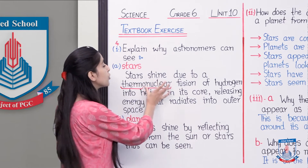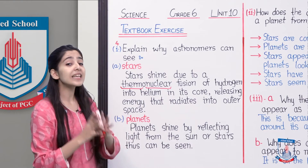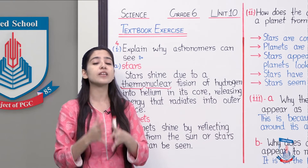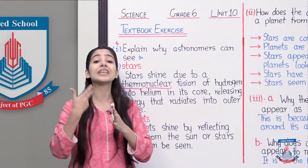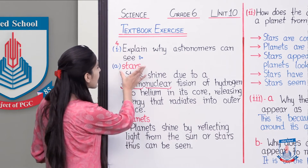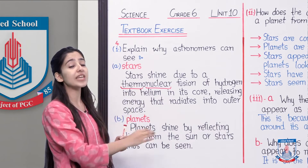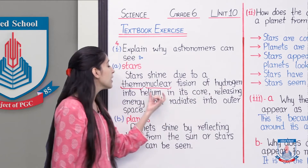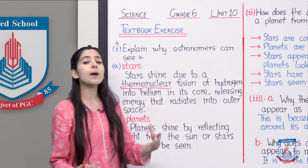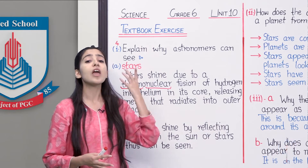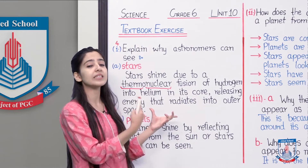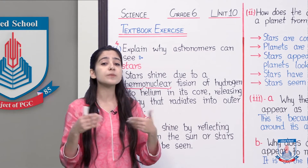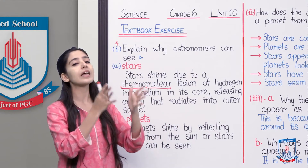Iska matlab ke thermonuclear fusion kya hoti hai? Yeh ek aisa reaction hai jismein do atoms ke nucleus aapas mein fuse honge, aur hamare paas heat energy, ya phir kisi aur form mein energy produce hogi. Toh jo stars hoti hain, usmein lagataar is tarha ki reactions take place karti hain. Woh do atoms hain jinkki fusion hoti hai — woh hain hydrogen atom with helium atom. Jab yeh do atoms aapas mein fuse hoti hain, toh hamare paas energy produce hoti hai, aur is energy ki wajah se humein stars nazar aate hain. Stars mein jab yeh fusion hoti hai toh light produce hoti hai, aur yeh jo light hai, yeh outer space mein radiate ho jati hai, aur humein stars nazar aane lag jaate hain.